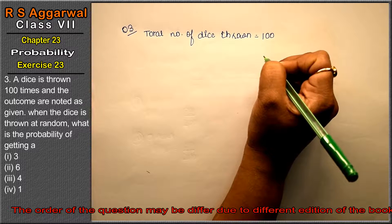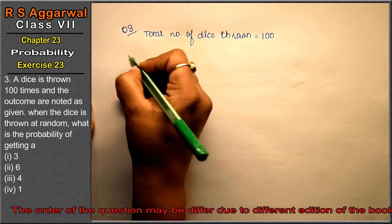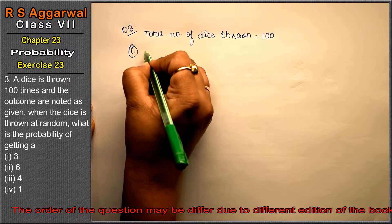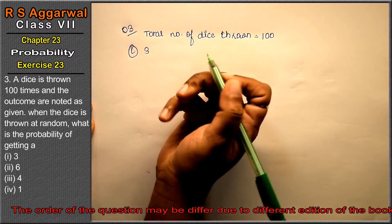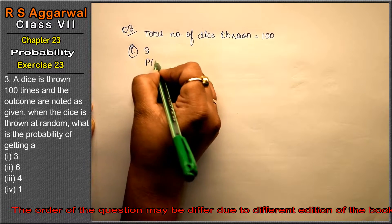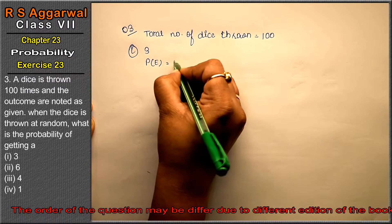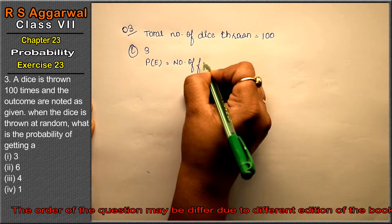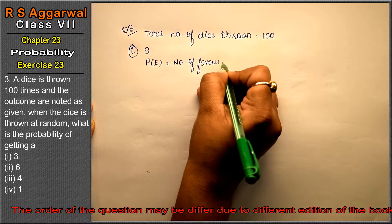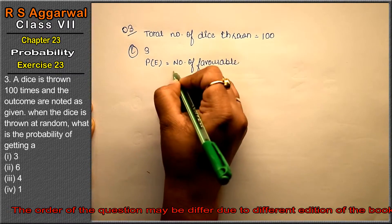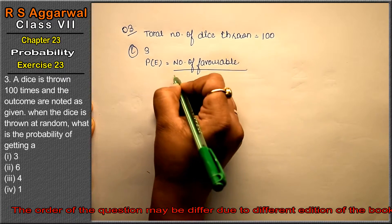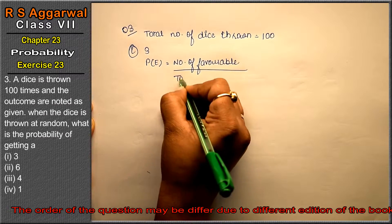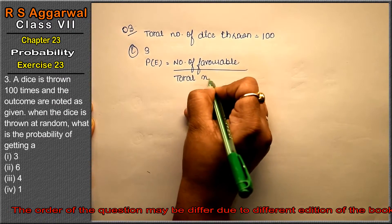We have been given different outcomes. When a dice is thrown at random, what is the probability of getting 3? The formula is: number of favorable outcomes divided by total number of outcomes.